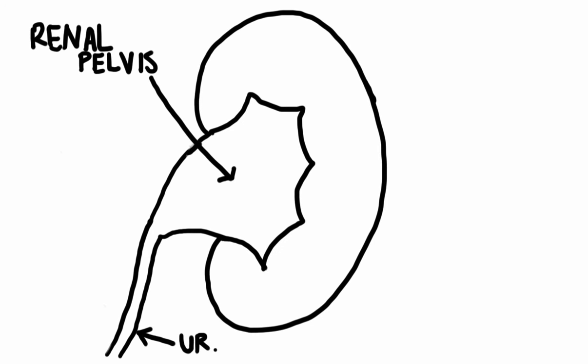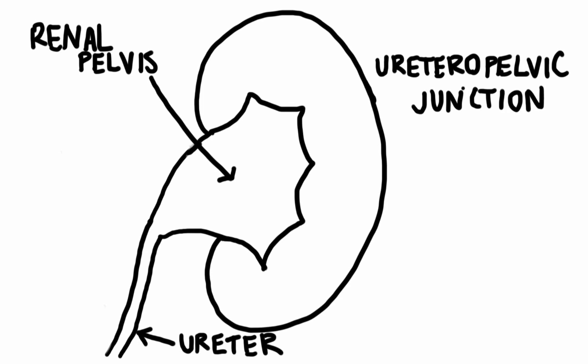The urine first collects in part of the kidney called the pelvis. The pelvis funnels gently to form a ureter. The funnel formed by the kidney pelvis and ureter is called the ureteropelvic junction, or UPJ.